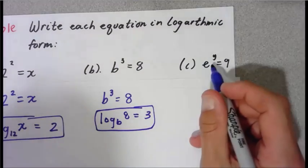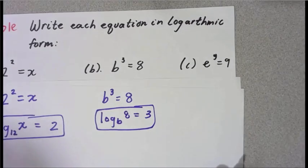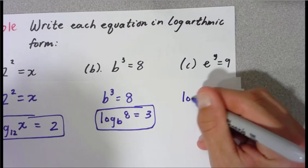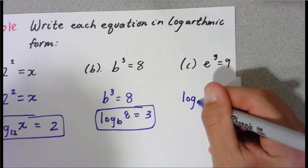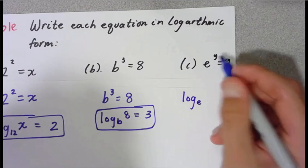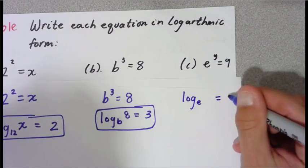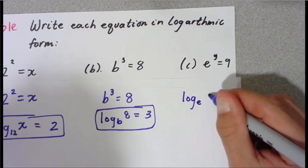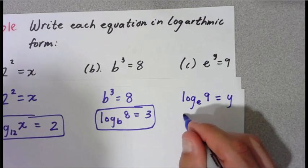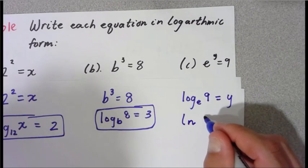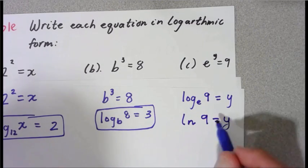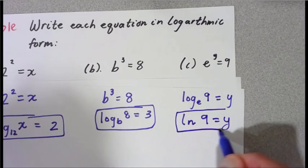And lastly, e to the y equals 9. Now this is special. When we have log, we're going to have log base e. The logarithm is equal to what the exponent of the exponential is, so that's y, and then we have 9 here. Log base e — that's what's called the natural logarithm. So this would actually be ln of 9 equals y. And there's the inverse of e to the y equals 9.